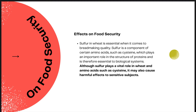Another effect associated with the sulfur cycle accounts for food security. Sulfur in wheat is essential when it comes to bread-making quality.